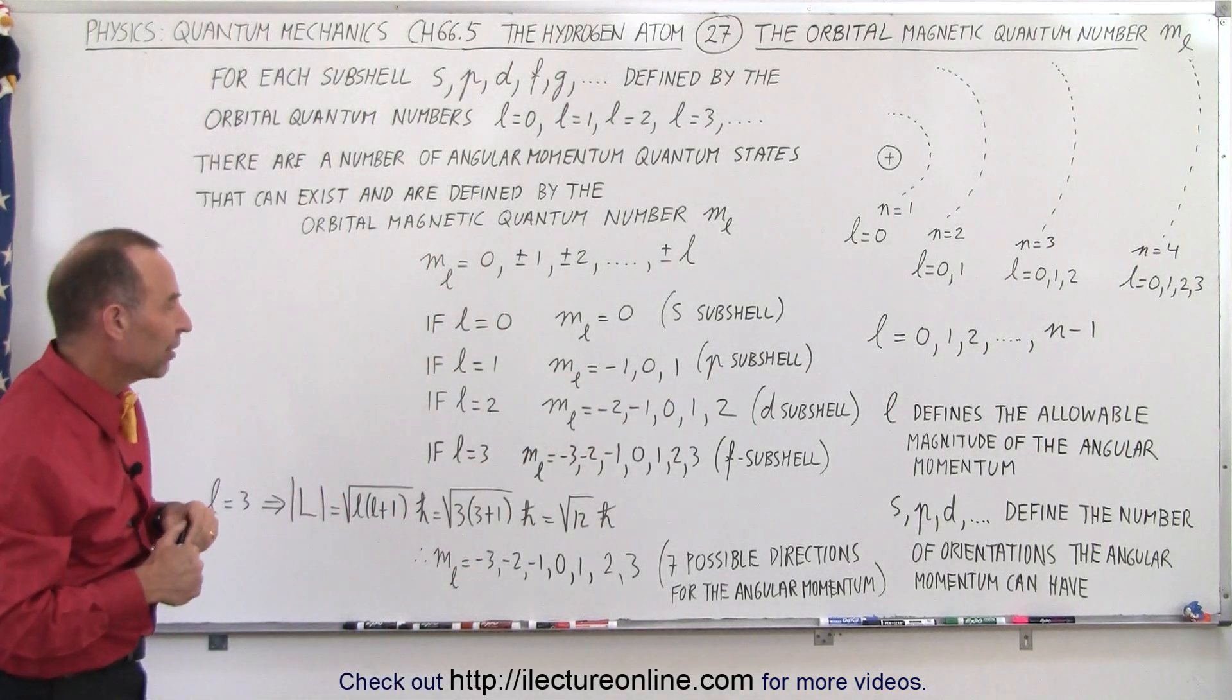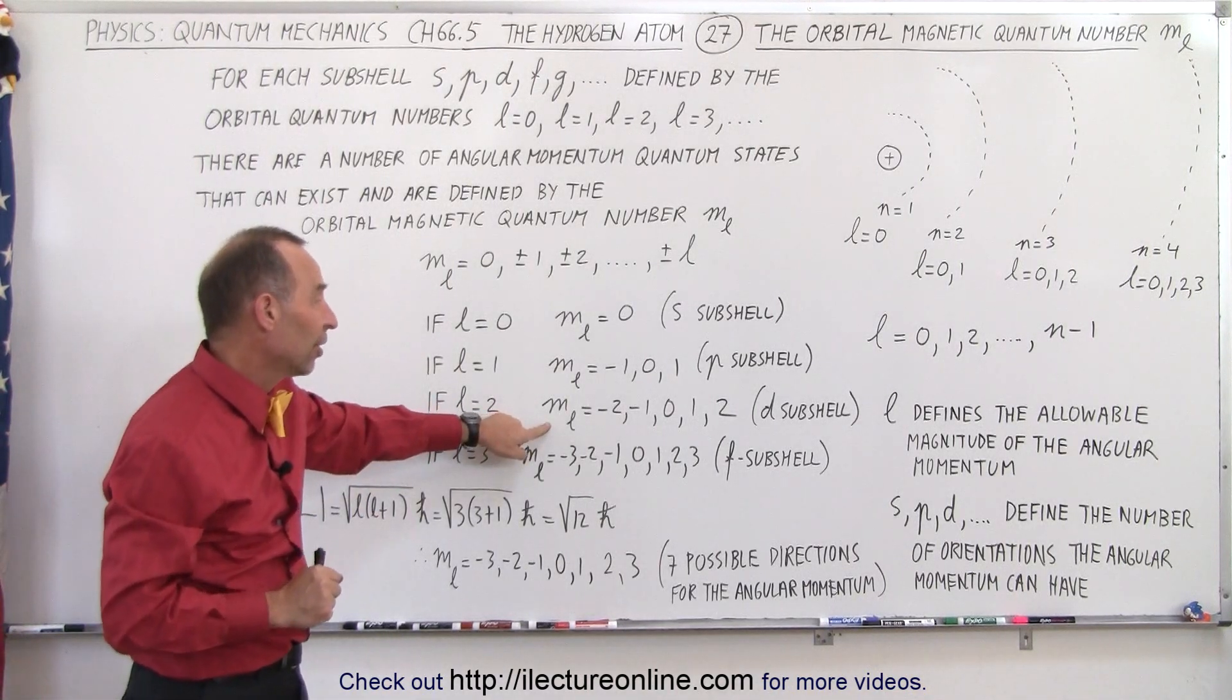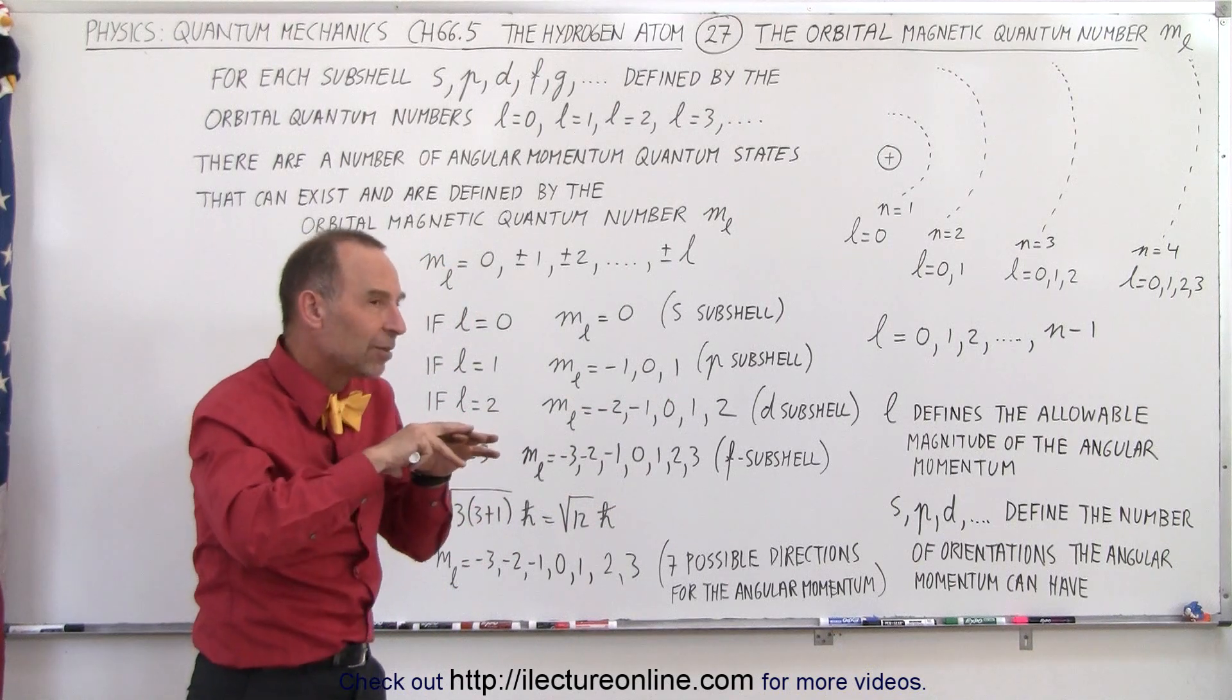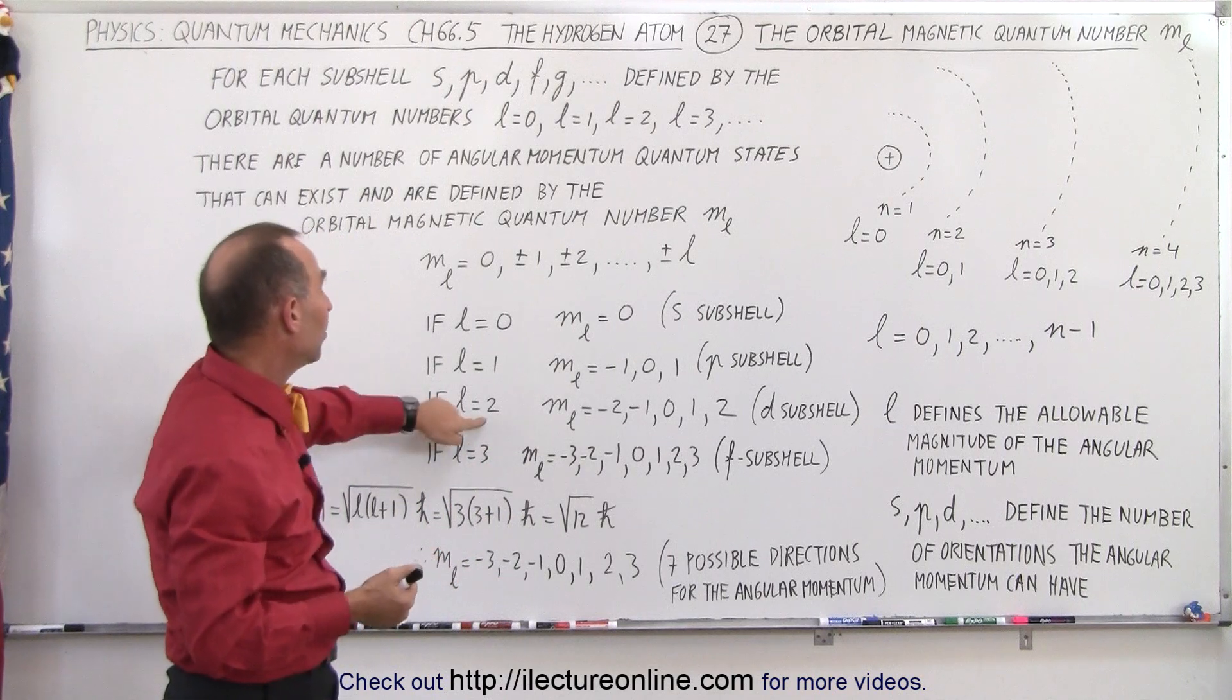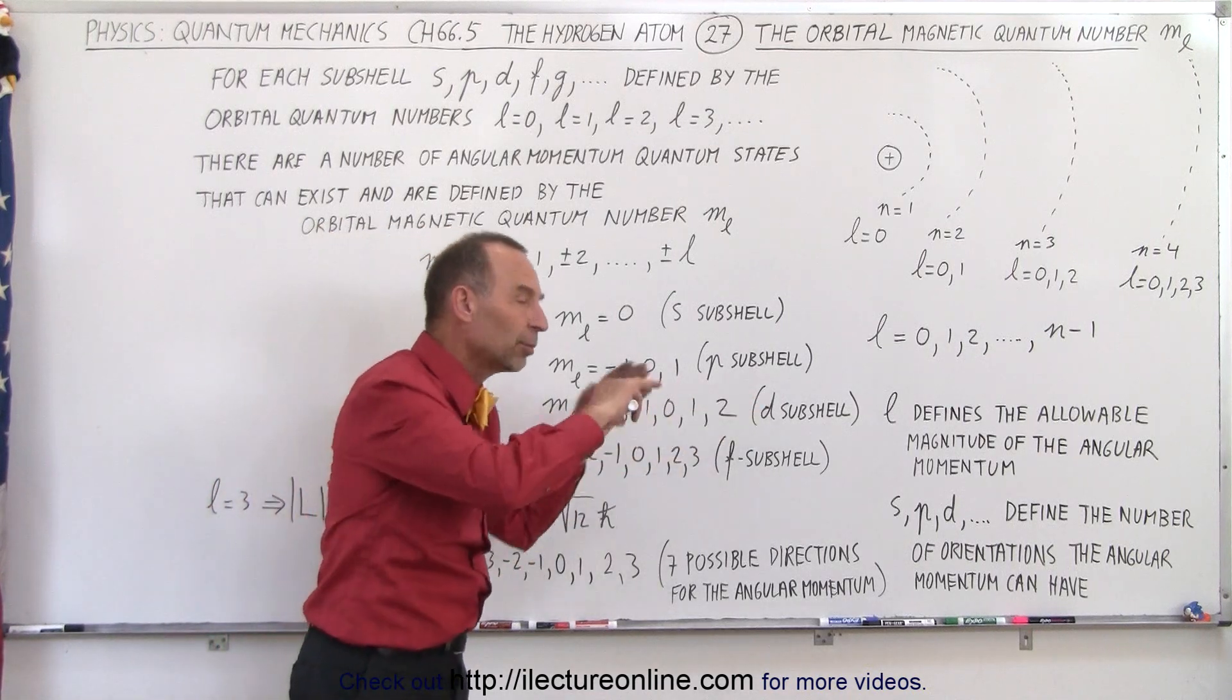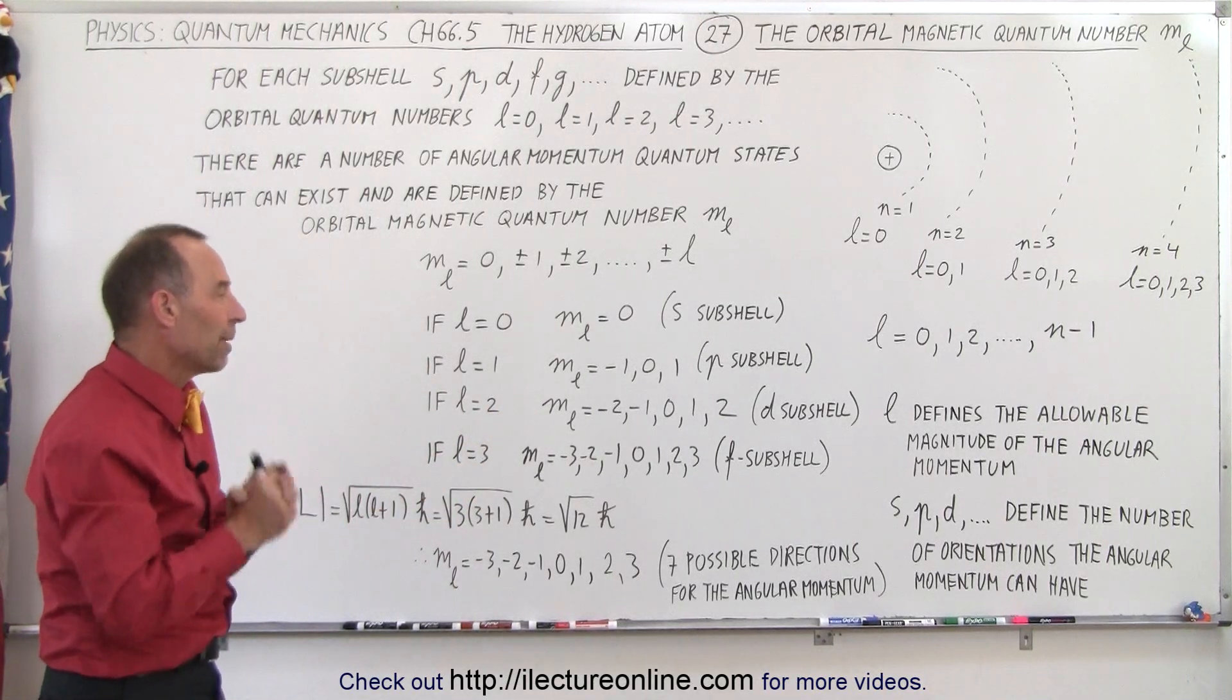If L is equal to 2, that means M sub L can have five possible values, making up the D subshell. The values can be minus 2, minus 1, 0, 1, and 2. So that defines a subshell within the shell for the energy level. In this case, that would be L equals 2. M sub L can have the values minus 2, minus 1, 0, 1, and 2. That makes up the D subshell, but M sub L having five values indicates there can be five different directions for the angular momentum.